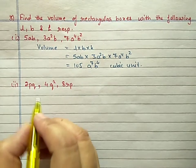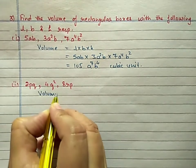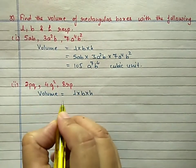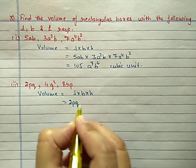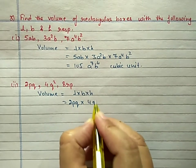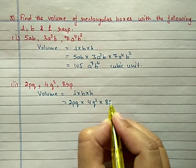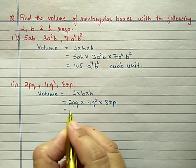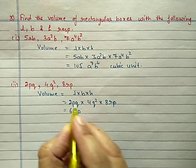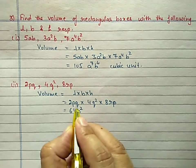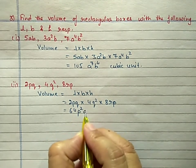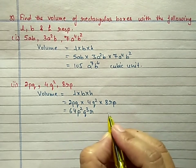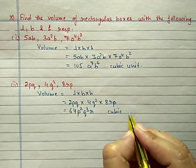Second part: Volume equals length × breadth × height. Length is 2pq, breadth is 4q², and height is 8rp. Multiply numbers: 2 × 4 = 8, 8 × 8 = 64. p has powers 1 + 1 = 2. q has powers 1 + 2 = 3, so q³. And r has power 1. Answer: 64p²q³r cubic units.